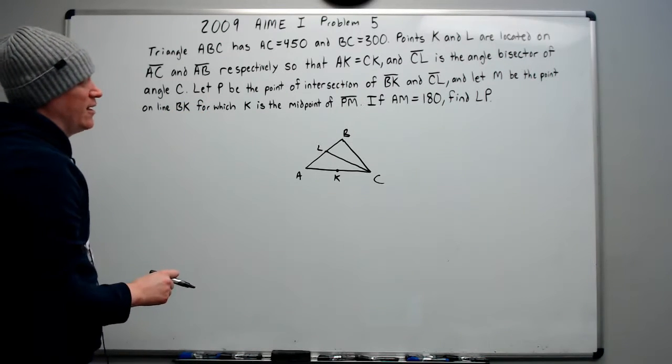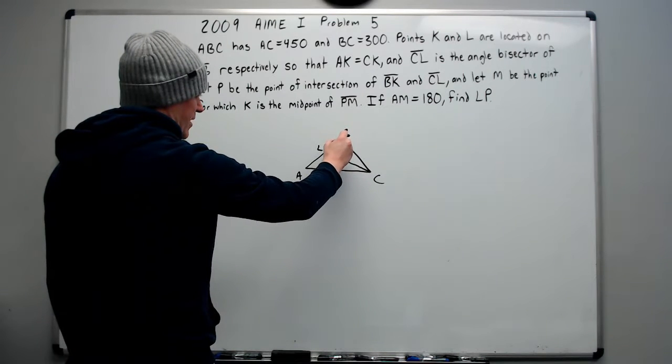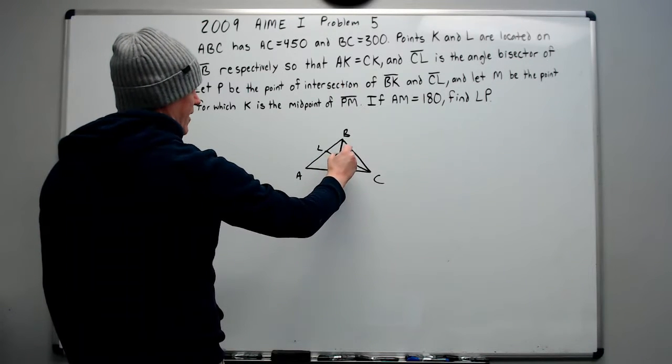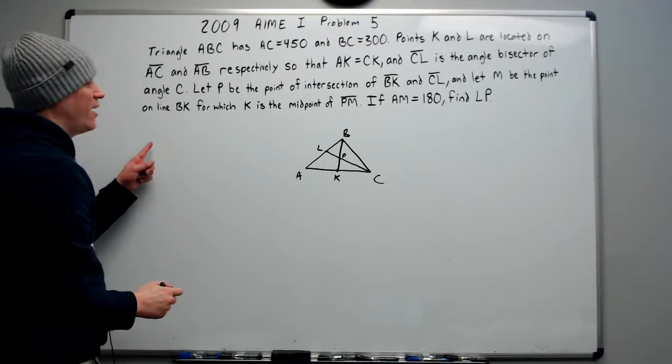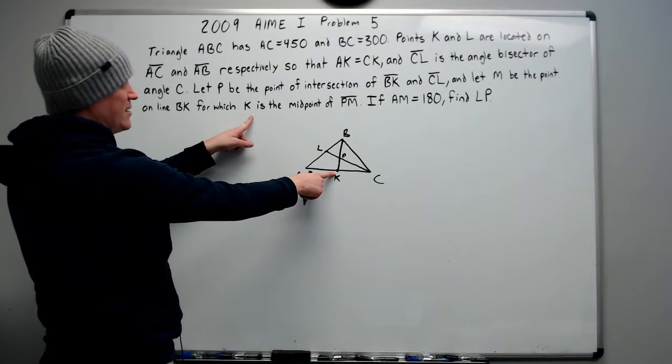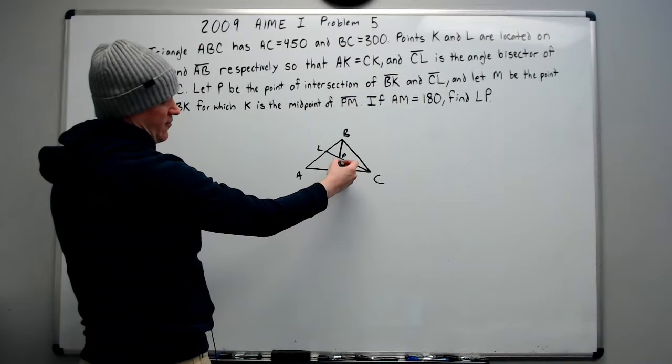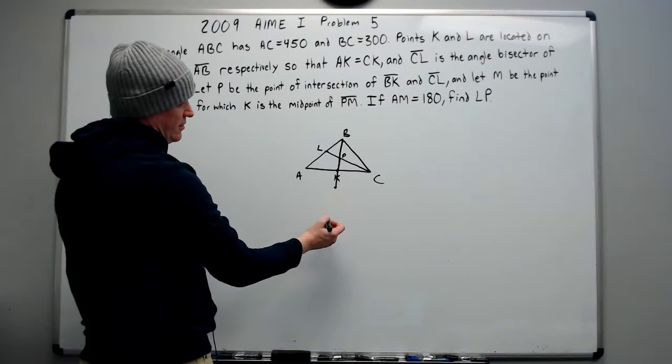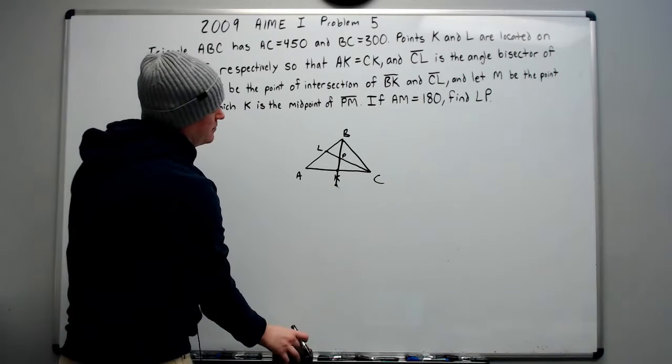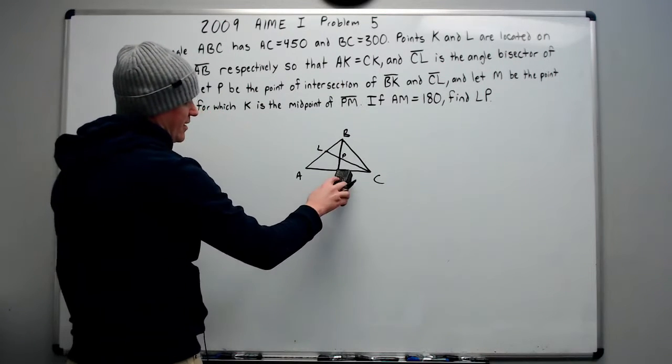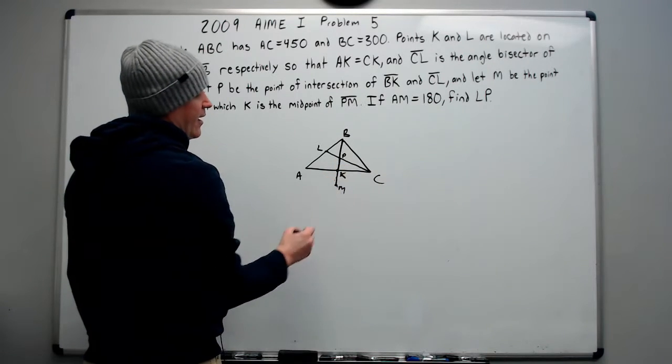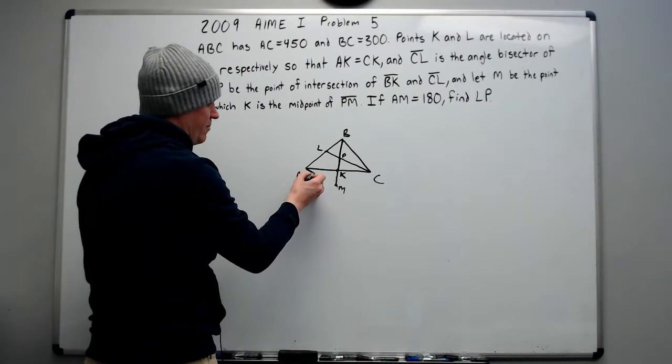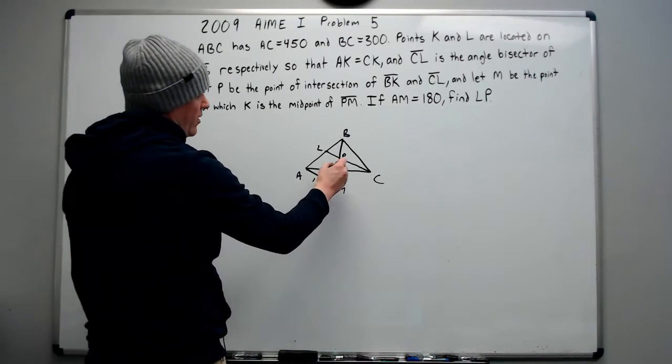Let P be the point of intersection of BK, which we don't have drawn, so let's draw that: B to K. And CL. So we then know that P is this point right here. And let M be the point on line BK for which K is the midpoint of PM. So let's think. If PK is this distance, go about the same distance out, maybe here. And that's going to be M. We'll erase the K and draw it off to the side. So the K is here now. And it says that AM equals 180. But there's no AM, so draw it. A to M will look like this. And that is 180. We also know this equals this.